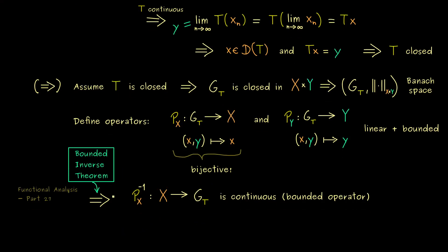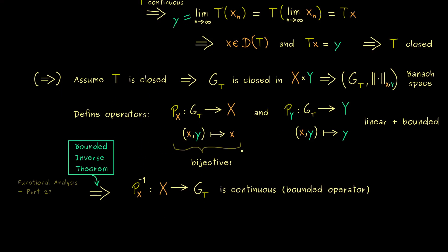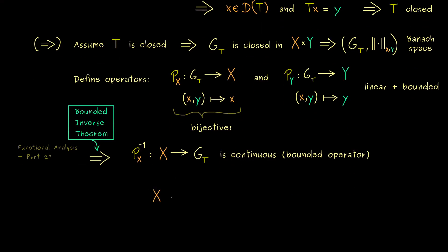Then let's go to the next step and please recall we want to show that T is also continuous. Hence an idea would be to write T as a composition of continuous maps. So T goes from X to Y and the question is can we make a detour with our projection maps. This means we first go to the space G_T. And now we know we can do that with the map p_X inverse.